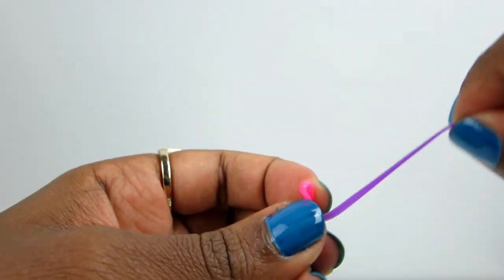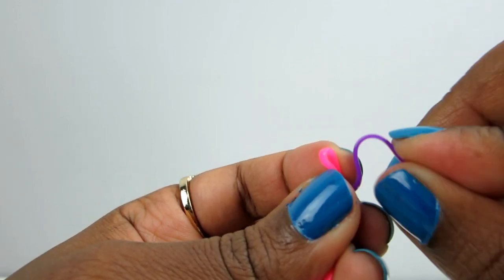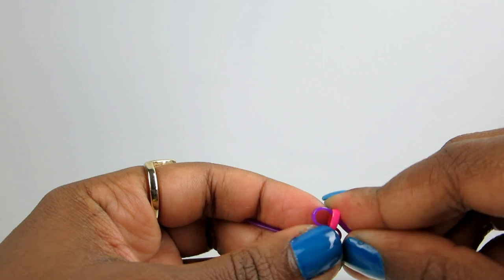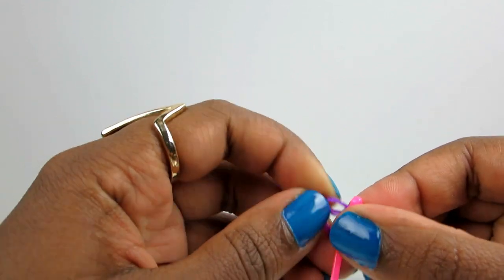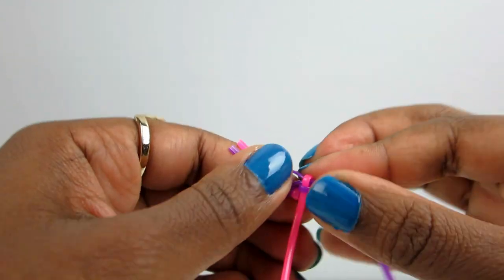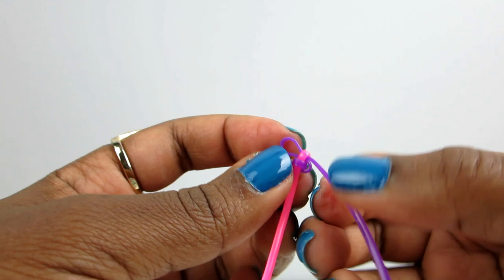So now I'm just going to go back and forth making little rabbit ears and putting them through each other. So here, purple in pink, pulling down the pink side. And now it looks like this.